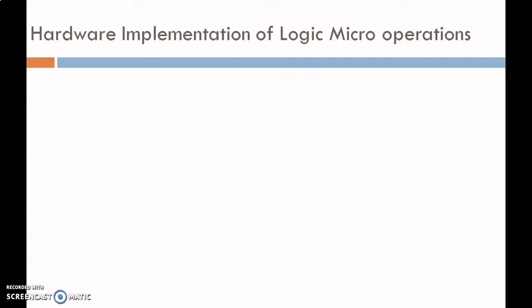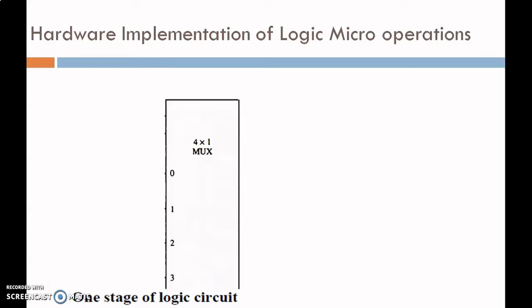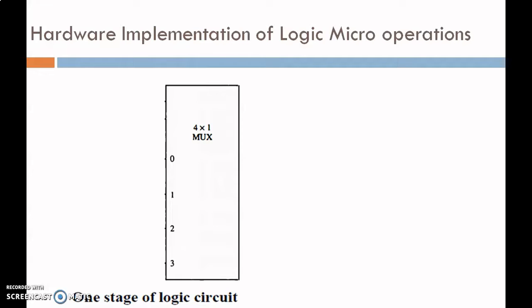Now let us look at the hardware implementation of Logic Micro Operations. Here we explain one stage of the logic circuit. For that, we take one multiplexer which is 4-by-1. For that, we require two selection lines S1 and S0.